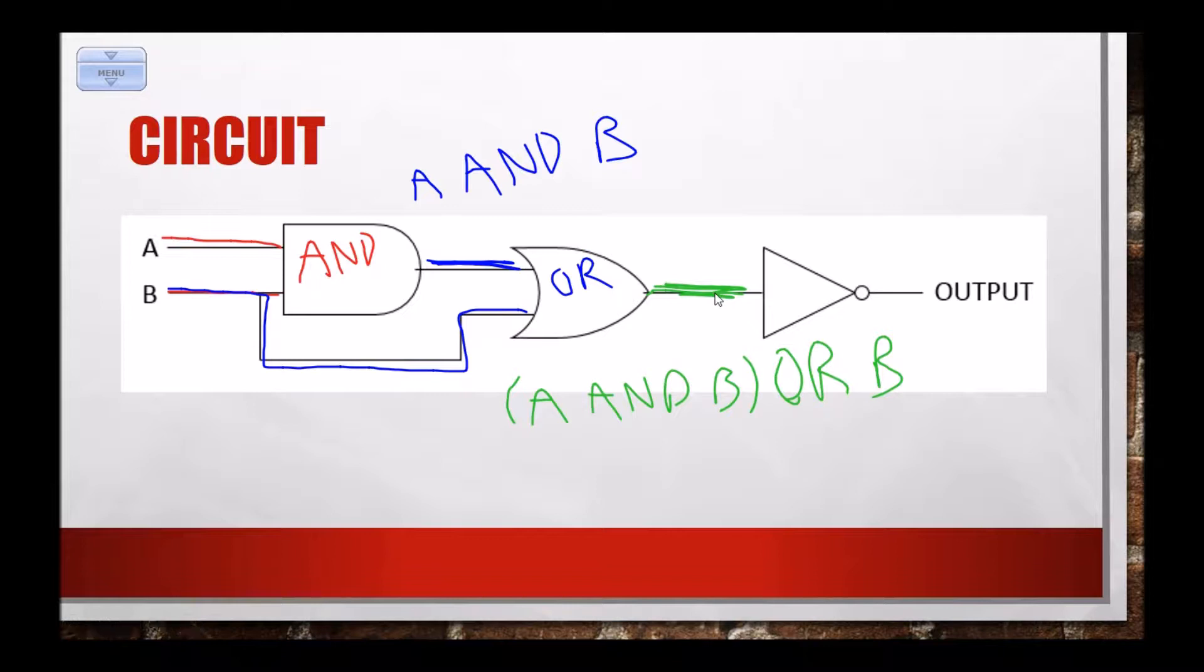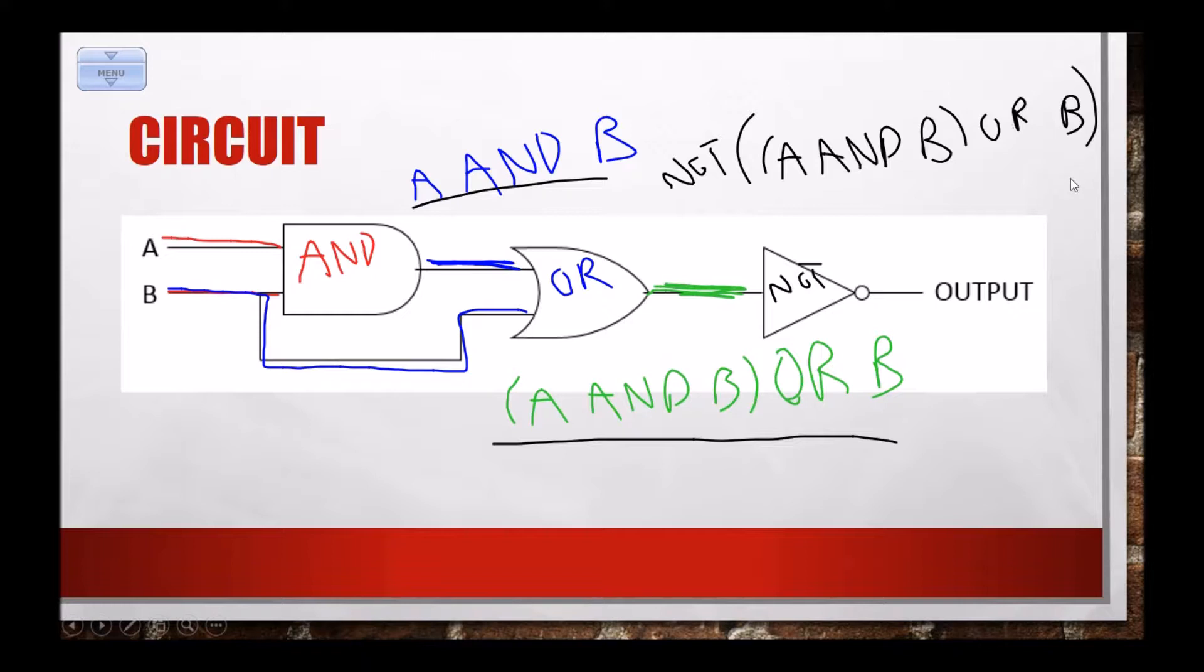Now this last gate is a NOT gate, or an inverter, so it's just going to flip the value of what's going into it. Well the thing going into it is A and B OR B, and so this gate is just going to take the negation of that, not that. So this whole circuit finds A and B, then it ORs that result with B, and then it negates it. It takes the opposite of that, it inverts those zeros to ones and ones to zeros.